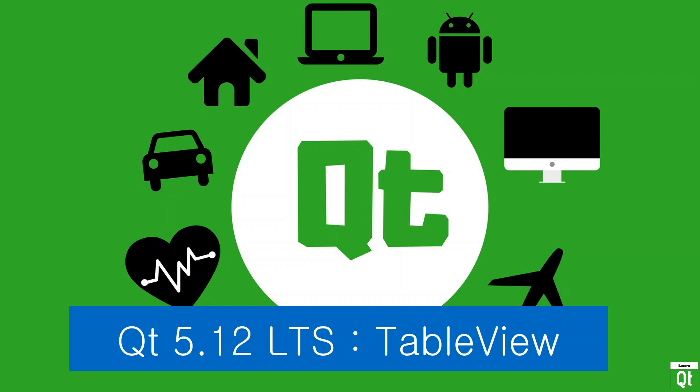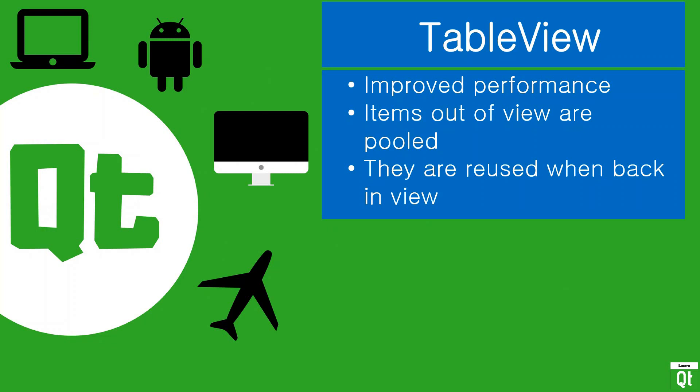In this video, we're going to try out the TableView component that was released in Qt 5.12. This component basically allows you to show the data in your models in a table in Qt Quick. This component is not perfect yet — there are a few things that still require a lot of effort to do using it, but it is getting there, and I think it's pretty usable if you happen to have a project that is using it.